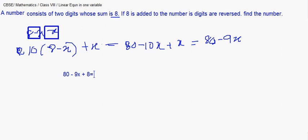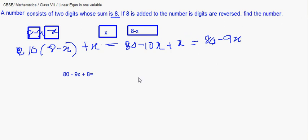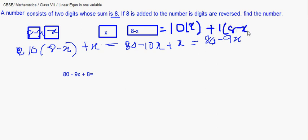If the digits are reversed, x comes to the tens place and 8 minus x goes to the units place. So the new reversed number becomes 10 multiplied by x plus 1 multiplied by (8 minus x), which simplifies to 10x plus 8 minus x, giving us 9x plus 8.